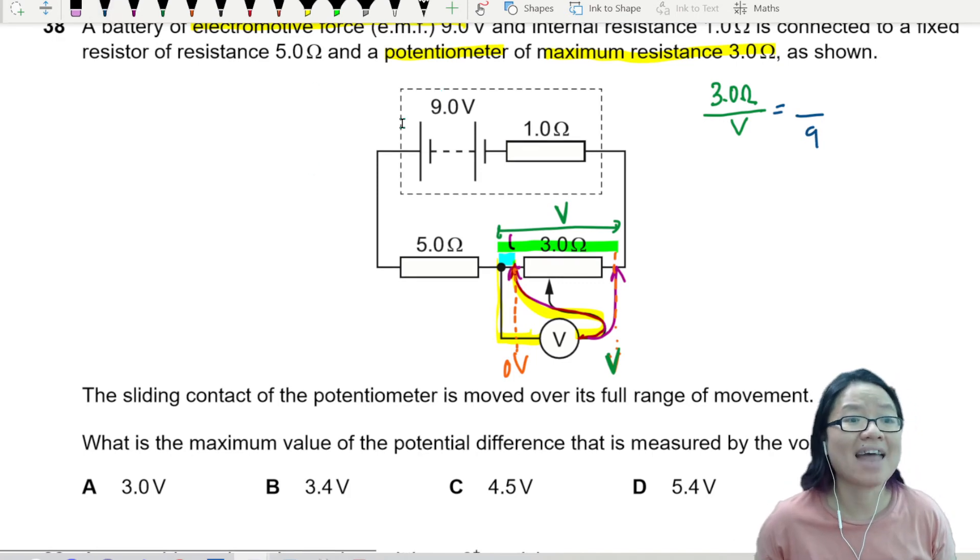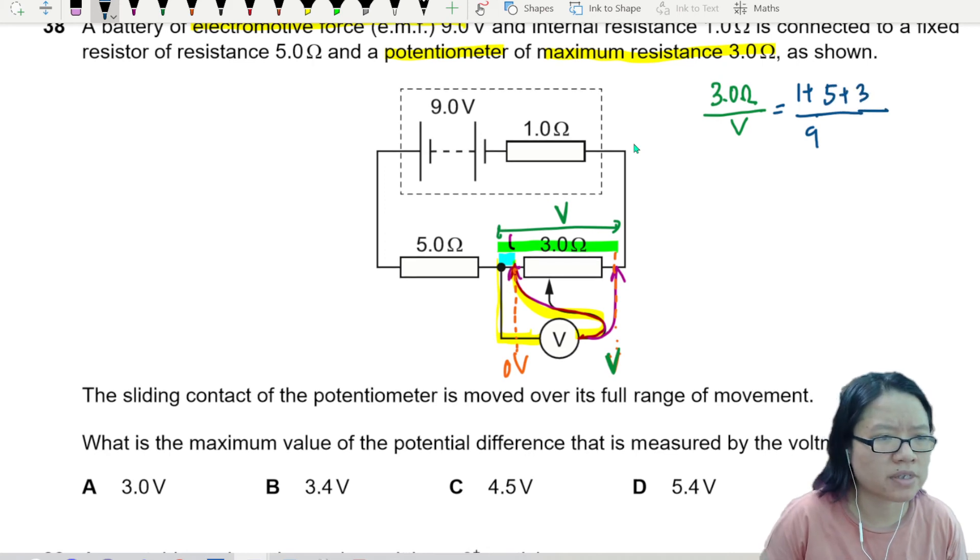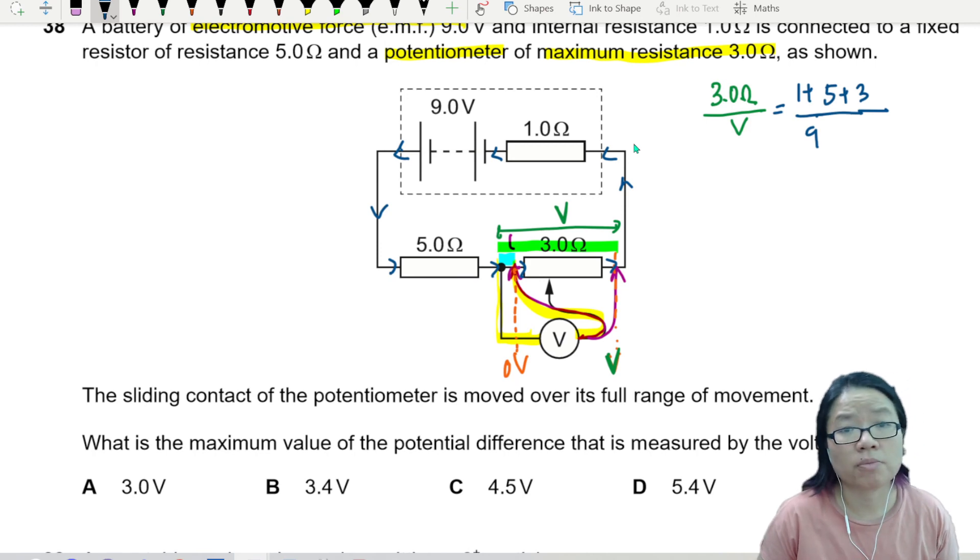The entire circuit has internal resistance 1 ohm, the 5 ohms, and then the 3 ohms, because this current will flow through all three of these resistors. So from here you will get V: three over V equals nine over nine, so V is 3.0 volts.